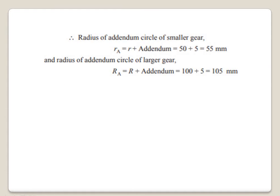Next we find the addendum circle radii. Small rA, the radius of the addendum circle of the smaller gear, equals r plus addendum, which is 50 plus 5 equals 55 mm. Capital RA, the radius of the addendum circle of the larger gear, equals R plus addendum, which is 100 plus 5 equals 105 mm.